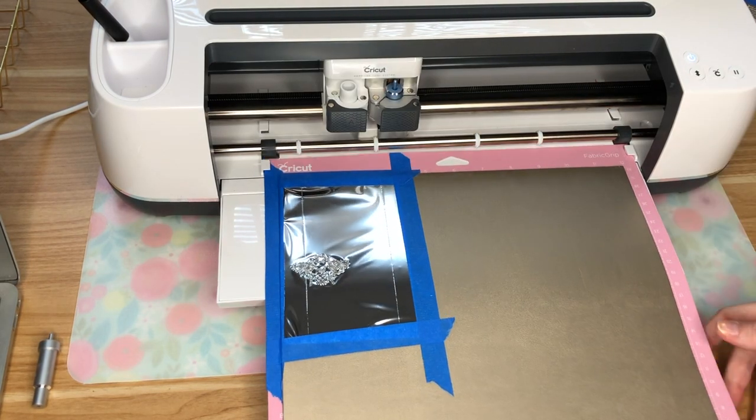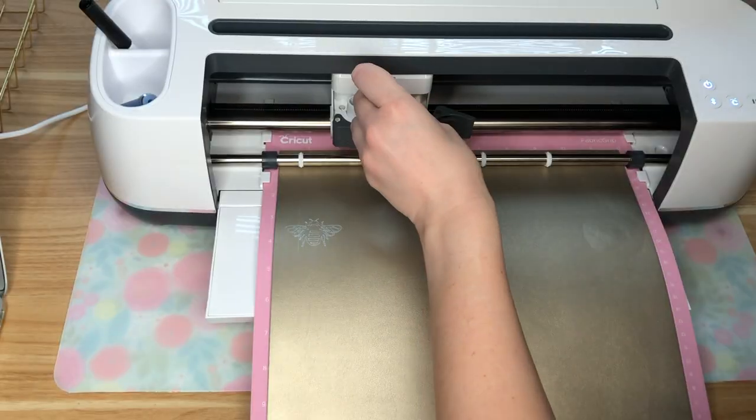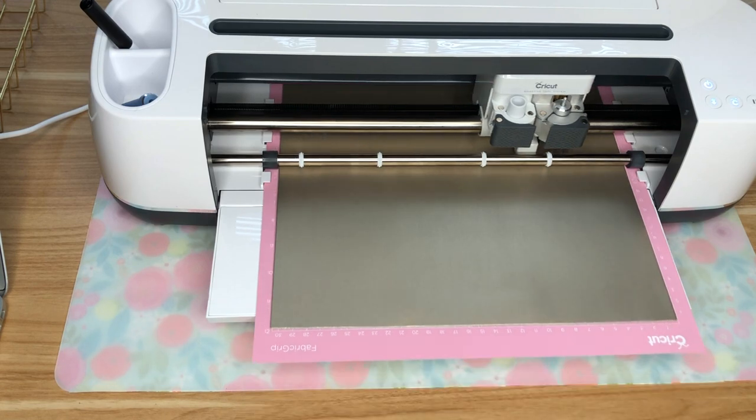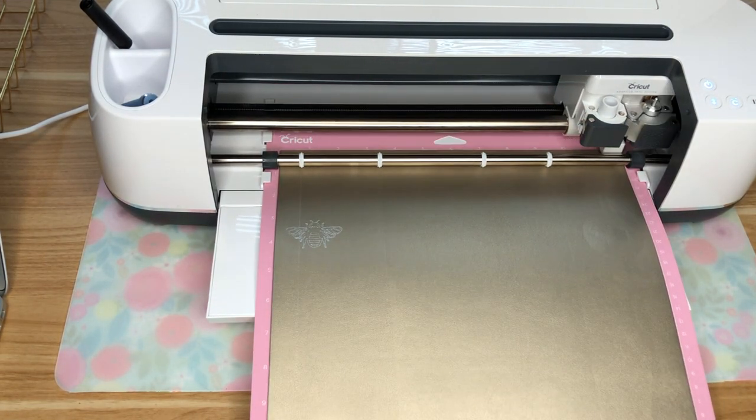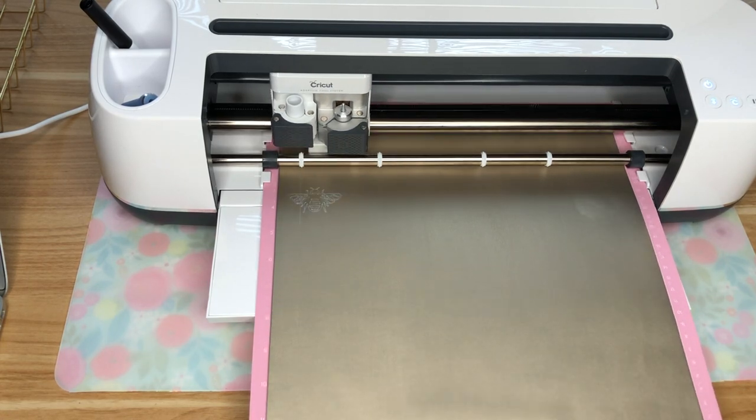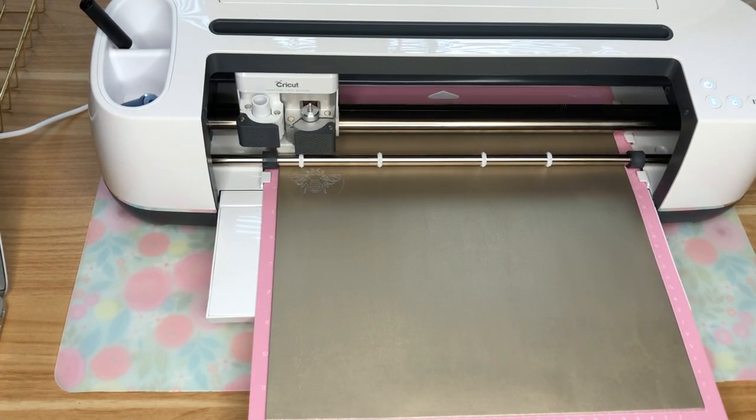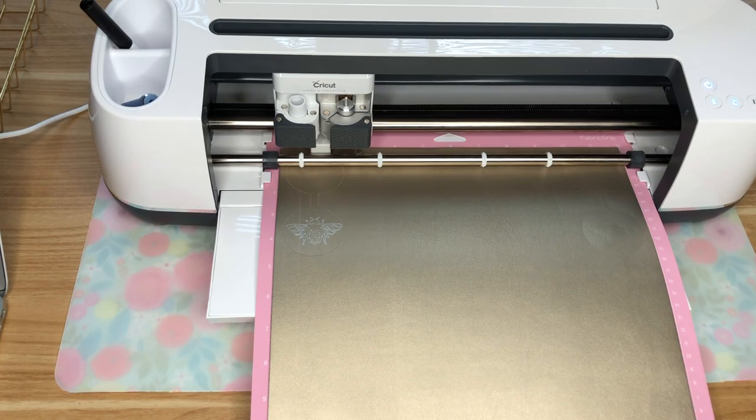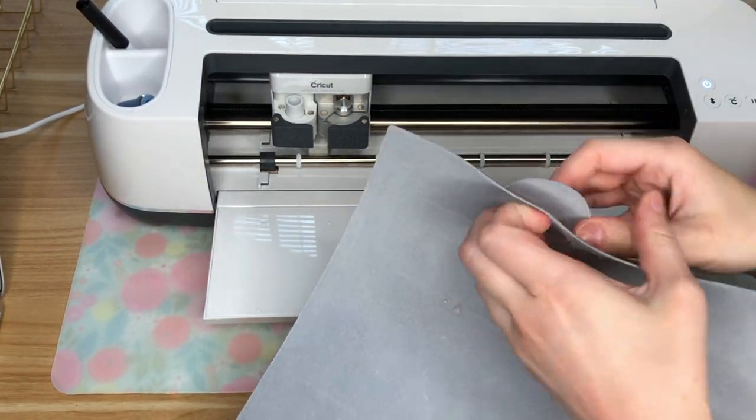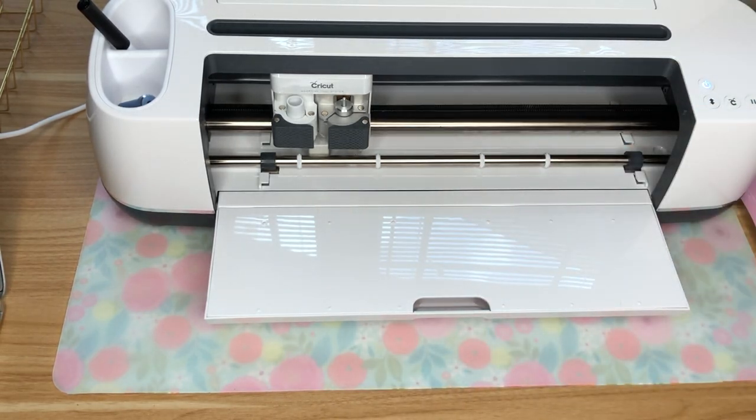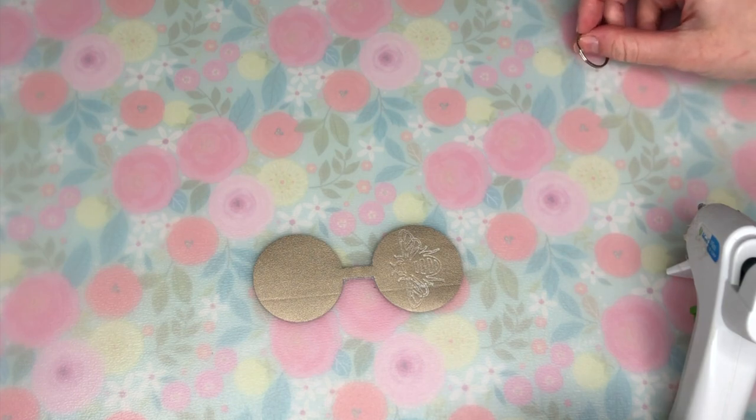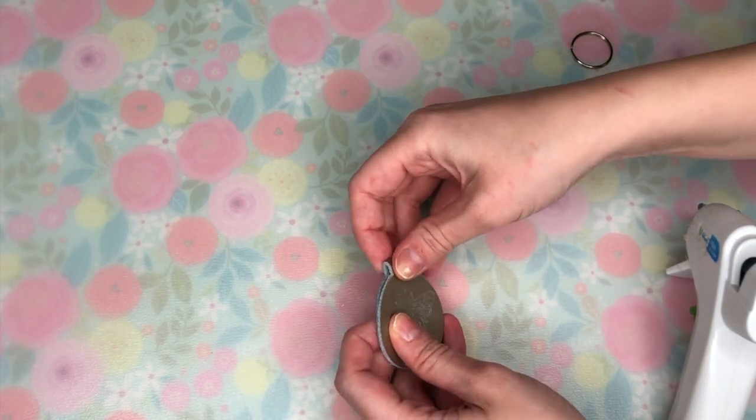This was my first time ever working with faux leather or doing a foil transfer so I was so happy that my bee turned out so well then I took out the foil transfer tool and replaced it with a deep cut blade to finish cutting out my keychain. I've only ever worked with vinyl and craft paper this was my first time working with a new material and I was so happy with how the keychain came out and working with the faux leather was way easier than I thought.